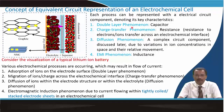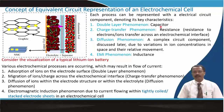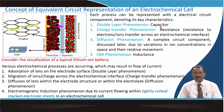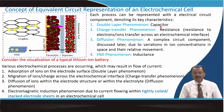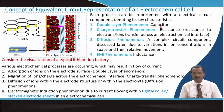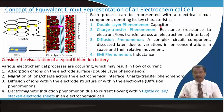The first electrochemical process is the double layer phenomenon, which acts like a capacitor — anions or cations adsorbing on the electrode surface. Then there is a charge transfer phenomenon: resistance to electron or ion transfer across the electrochemical interface. Then there is a diffusion phenomenon, which is difficult to represent as a simple circuit component due to ion concentration in space and their relative movement. There is also an EMI phenomenon related to inductance.